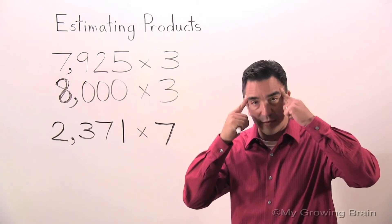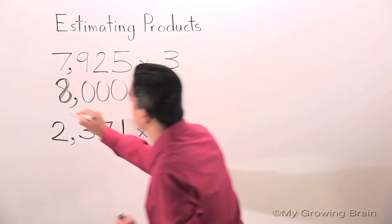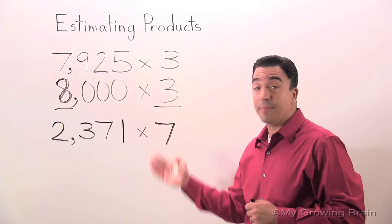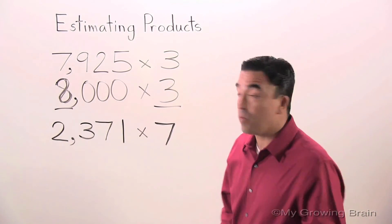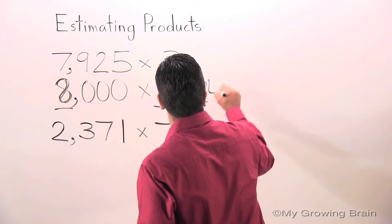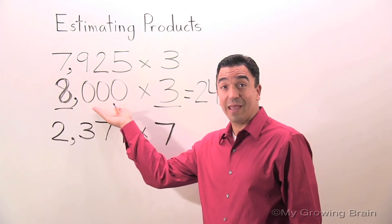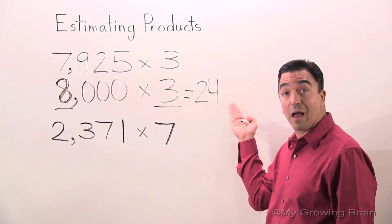Now, we're going to use mental math. Eight times three is equal to 24. I'm going to take my three zeroes and I'm going to put them right behind the 24.